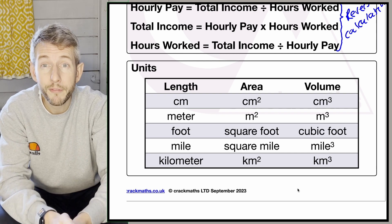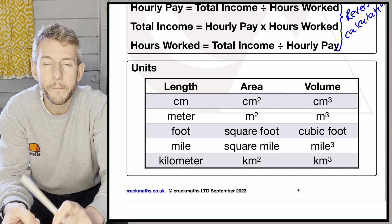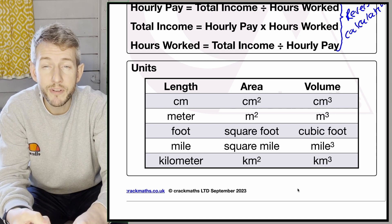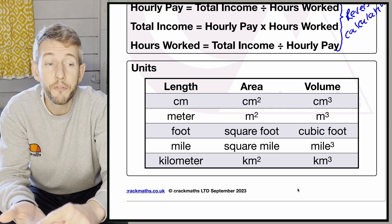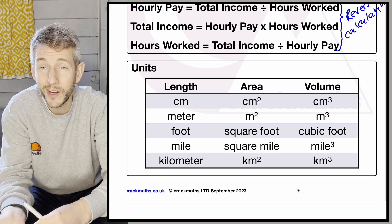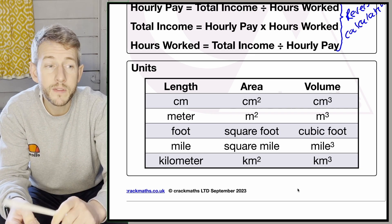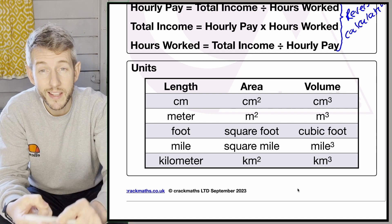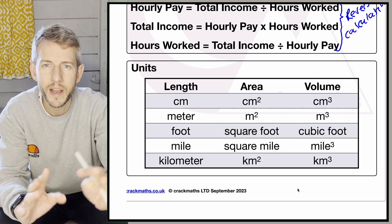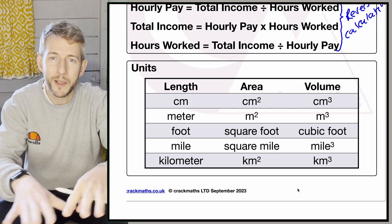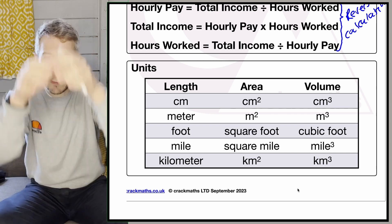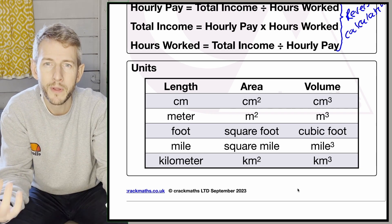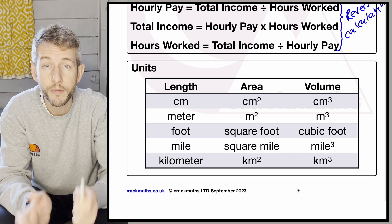Here is a table of different units you're expected to know. For lengths, we have centimetres, metres, feet, miles, and kilometres. A length unit squared gives the area unit — so centimetres becomes centimetres squared, metres becomes metres squared, and so on. Volume follows the same pattern using cubed. Squares are flat things used to measure space, while volumes are 3D spaces filled with a 3D object — hence the cube — which gives us centimetres cubed, metres cubed, etc.